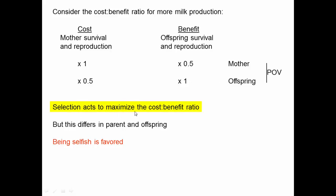Selection acts to maximize the cost-benefit ratio, but these cost-benefit ratios are different in parents and offspring. For increased milk production, the mother's cost is twice as much as the benefit, so there'll be stronger selection to limit milk production. Whereas for the offspring, the benefit is twice as much as the cost, so you would expect selection to increase milk production. For each individual, being selfish is favored, but the optimum way to be selfish differs. Selection in mothers drives the optimum amount of milk production to be less than the optimum for offspring — this is where we get a conflict, a tension between the amount of milk production that maximizes the mother's fitness versus the offspring's fitness.